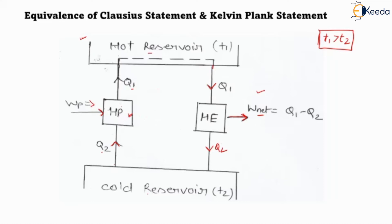Consider a heat pump which transfers heat from the cold reservoir at lower temperature to the hot reservoir at temperature T1 with no work done on the system. If the work done on the system is zero, this is violating the Clausius statement. When work done on the system is zero — that is, WP equals zero — there is no work done on the system, and this particular condition violates the Clausius statement.